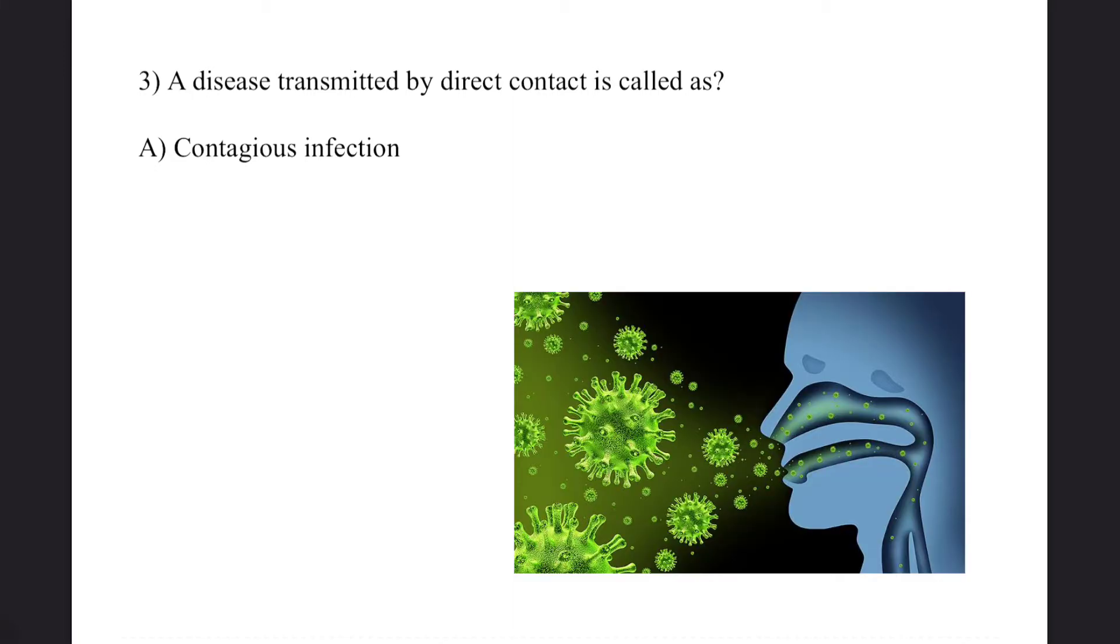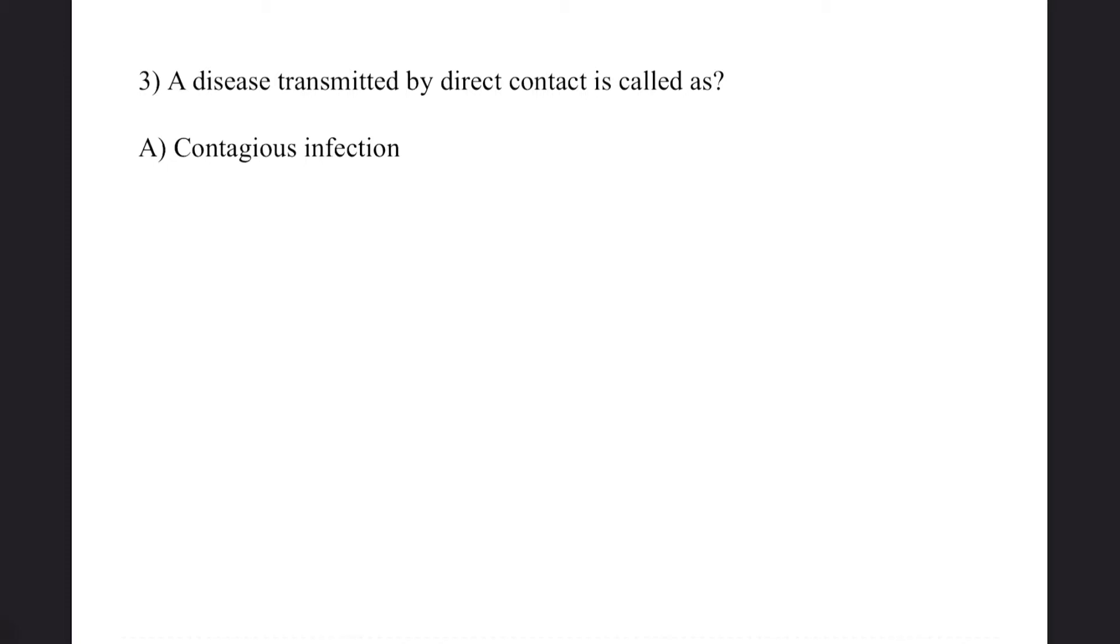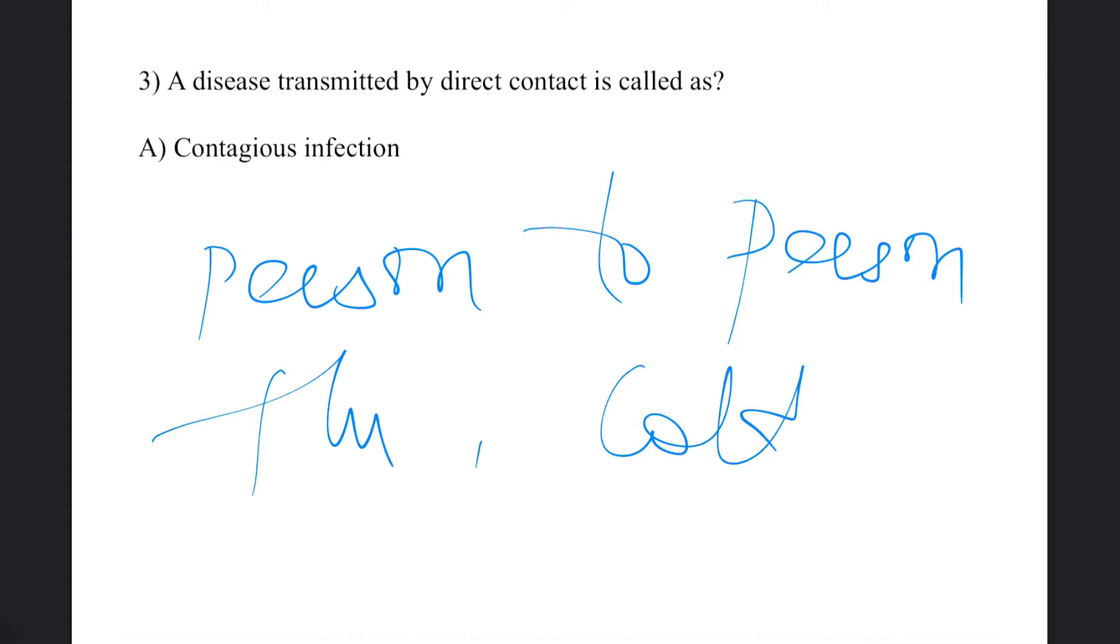Here contagious infection spreads from person to person. Examples are flu or cold. The fourth question: A chemical agent that inhibits bacterial growth is called? Answer: bacteriostatic.